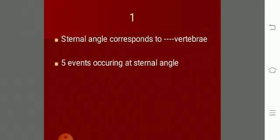The second costal cartilage is attached at the level of the sternal angle. Then the arch of aorta begins at that level and the arch of aorta ends at that level. Then the thoracic duct will be crossing behind the esophagus from right to left at that level.